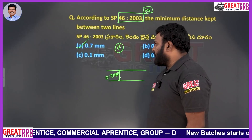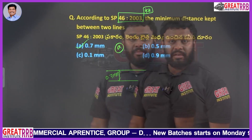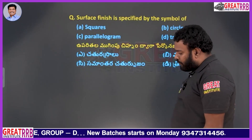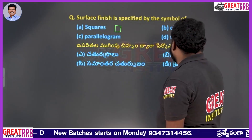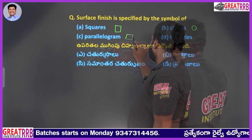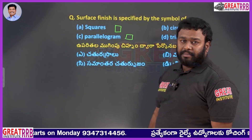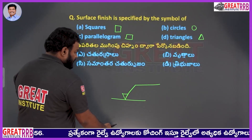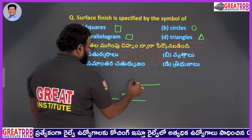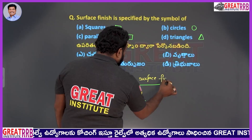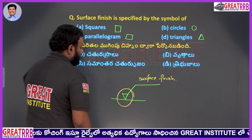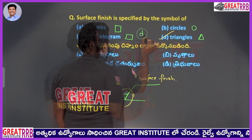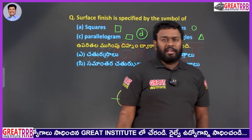Moving to the next question. Surface finish is specified by a symbol of: square, circle, parallelogram, or triangle? Surface finish is shown using a diagram — it will be a triangle. Option D will be the right answer for the given question.